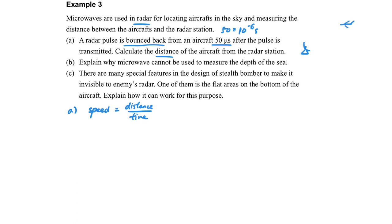Let me draw the radar station and aircraft here. We have a signal sent out, then it hits the aircraft and comes back. We want to find the distance between them, which is D. We have speed equals distance over time. Why is the distance 2D instead of 1D?